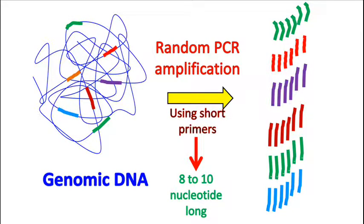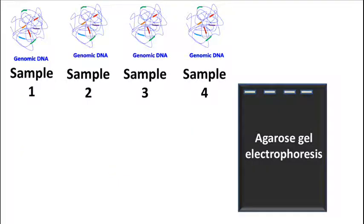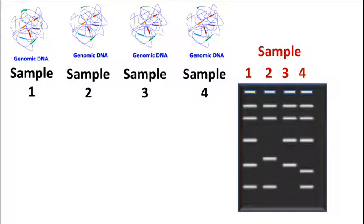Once the PCR is complete, the PCR amplicons are separated by agarose gel electrophoresis. Now, if the genomic DNA samples have variation, then RAPD gel will show differences in the band pattern.